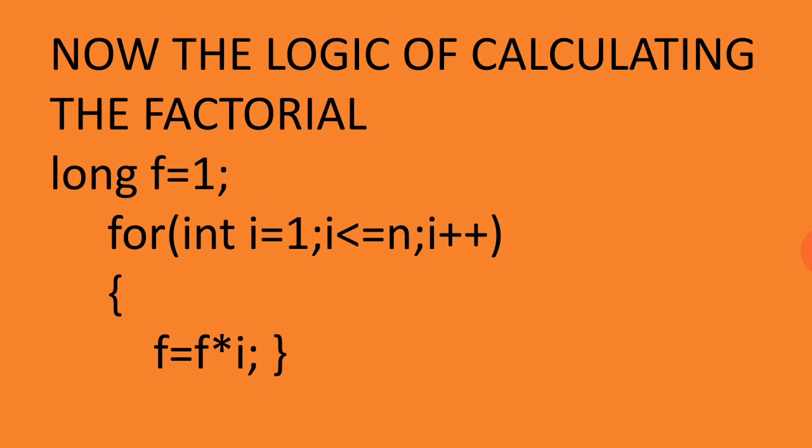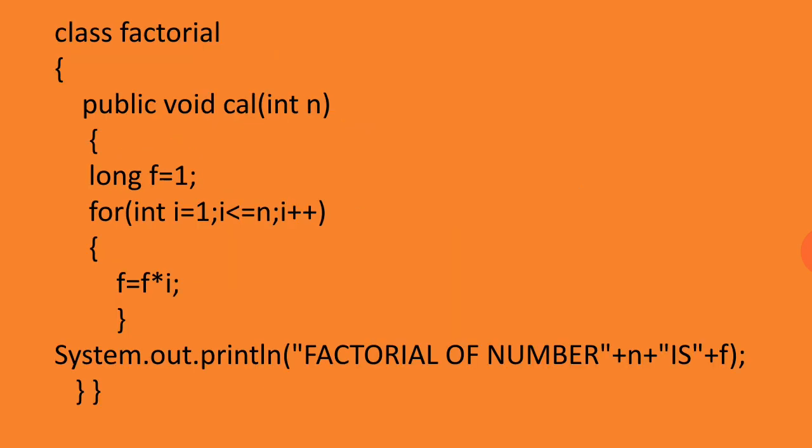When this task is over, we can simply print f which will have the factorial of the number. But never place the print statement inside the loop because we want the final value of the factorial to be printed. Now we talk about the program: class factorial inside that function.